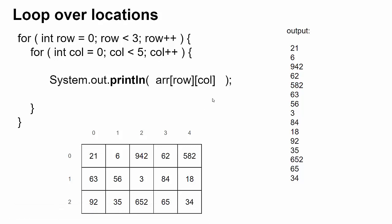But the problem is when we print this, we're using a println statement. You can see here, the output has the numbers in the grid, only it doesn't look like a grid. I'm still doing 21, 6, 942, 62, 582. That's these ones. But then when I move to the next row, all the numbers are just displaying vertically downwards.